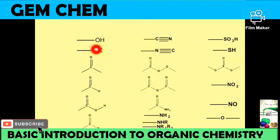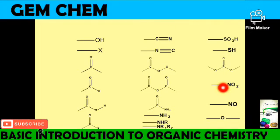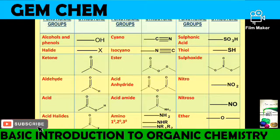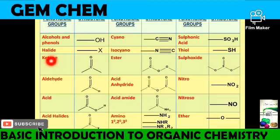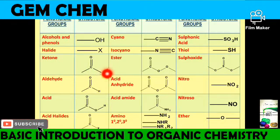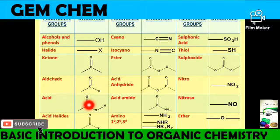Let us see the different kinds of functional groups. The first is alcohol or phenols, represented as –OH. Second is halide, –X, where X is chlorine, bromine, iodine, or fluorine. Next are ketone and aldehyde, which both have C=O. Ketone bonds with two hydrocarbon chains on both sides, whereas in aldehyde, one position is occupied by hydrogen.